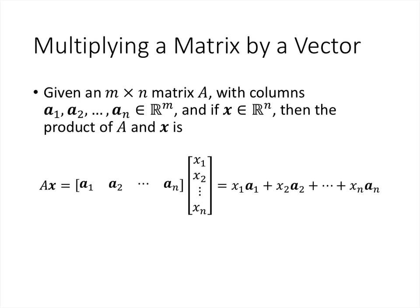First we need to define what it means to multiply a matrix by a vector. Given an m by n matrix — whenever you see that notation, the first number indicates the number of rows in the matrix, and the second number indicates the number of columns. The rows go left to right, the columns go up and down.